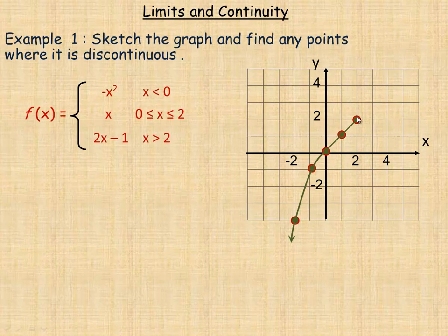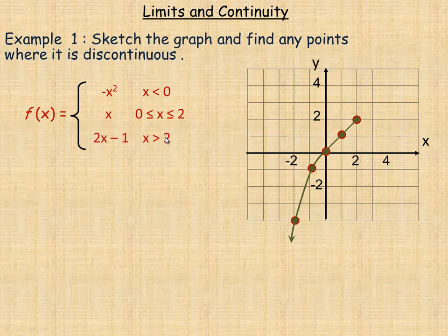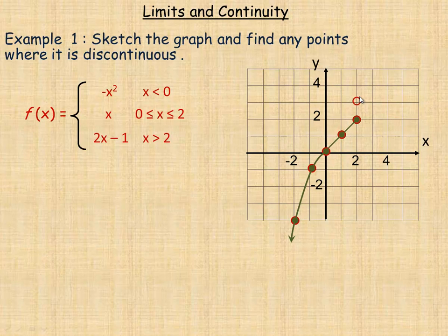Now what happens to the right of two? Where the function equals 2x minus one for x greater than two — if I put three in there, two times three minus one would be five, so the point (3, 5) is on the graph. Where x actually equals two, since x must be greater than two, we put an open circle there. Substituting two: two times two is four minus one is three, giving the point (2, 3), but with an open circle since that point isn't actually on the graph.